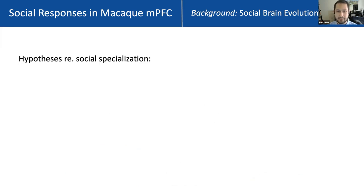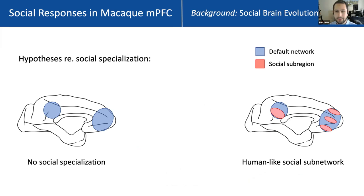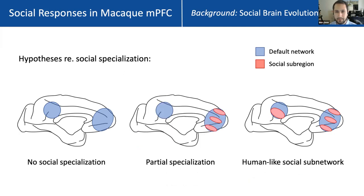We can imagine various hypotheses about social specialization within the DMN in macaques or in a common ancestor. One possibility is that there's no specialization — these animals have a default mode network, but they don't have socially specialized regions within it. At the other extreme, macaques might have a fully human-like social sub-network of the DMN. And we can imagine a range of possibilities in between, where maybe one or several sub-regions of the DMN have begun to evolve socially specialized components, but they haven't propagated throughout the full network.